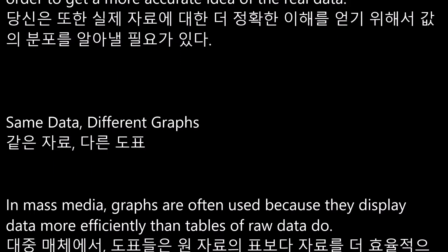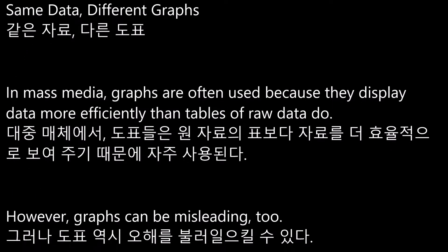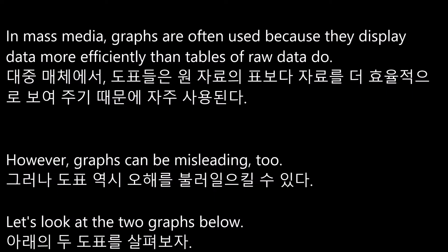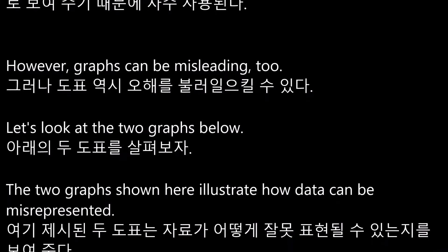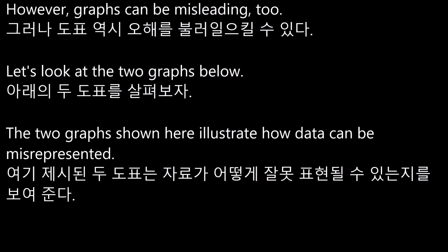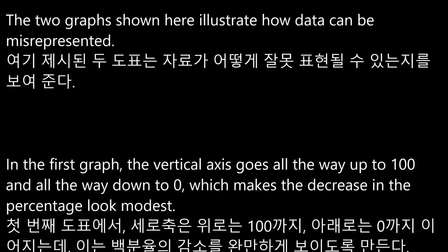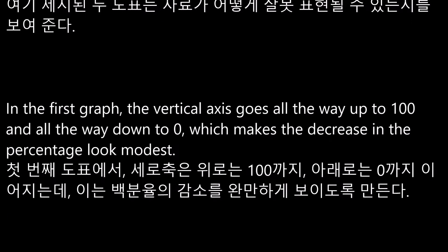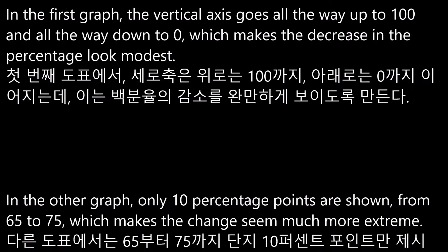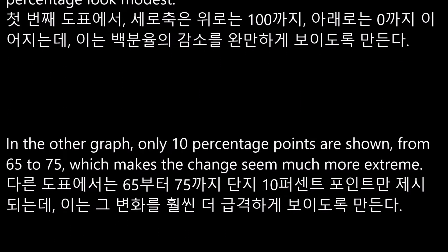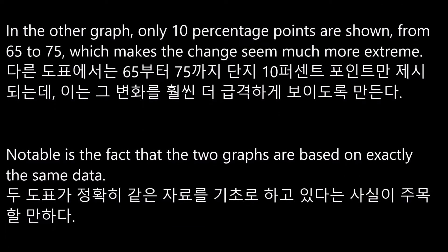Same data, different graphs. In mass media, graphs are often used because they display data more efficiently than tables of raw data. However, graphs can be misleading too. The two graphs shown here illustrate how data can be misrepresented. In the first graph, the vertical axis goes from 0 to 100, which makes the decrease in percentage look modest. In the other graph, only 10 percentage points are shown — from 65 to 75 — which makes the change seem much more extreme. Notably, the two graphs are based on exactly the same data.